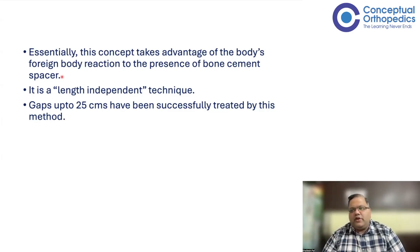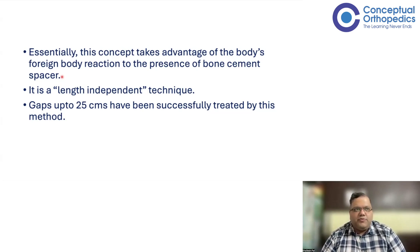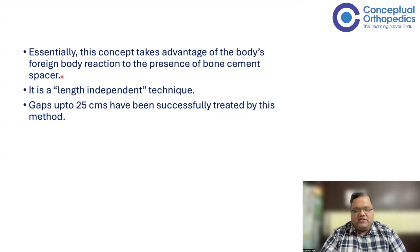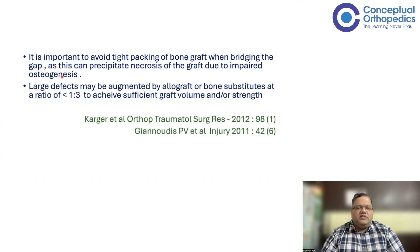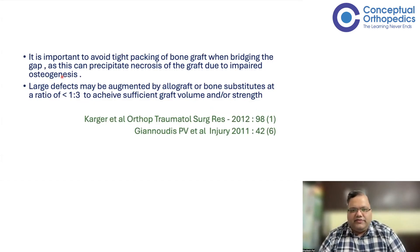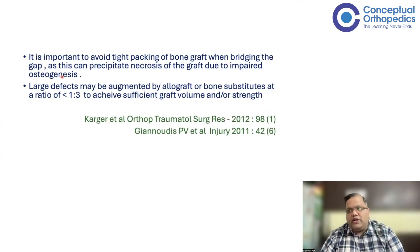The technique involves proper debridement, filling the entire defect space with cement, then at the second stage incising the membrane along its entire length, removing the cement, and packing in bone graft for the entire length. In Masquelet's series, gaps up to 25 centimeters were successfully treated, and subsequently other surgeons have treated even larger defects.